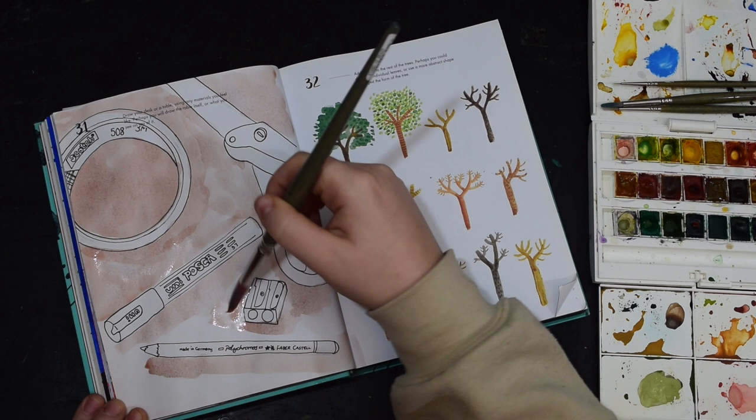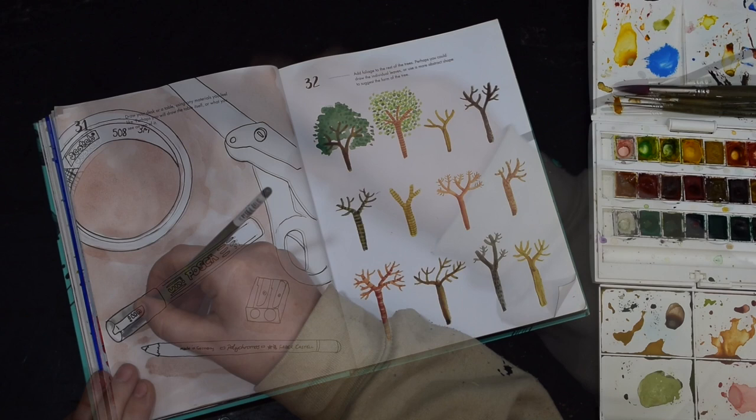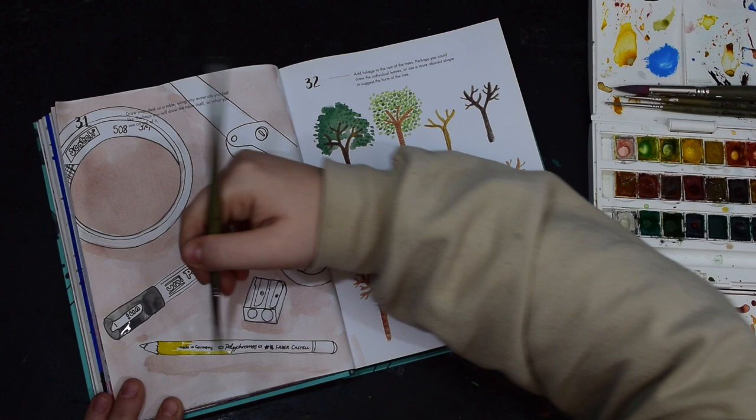Now I decided to do this reddish brown background because I felt like that was going to stand out against the supplies that I'd chosen because the Posca paint marker that I decided to use was grey, the pencil yellow, the sellotape which has got a slightly green tinge to it which I'd never have noticed before until I'm actually painting it.